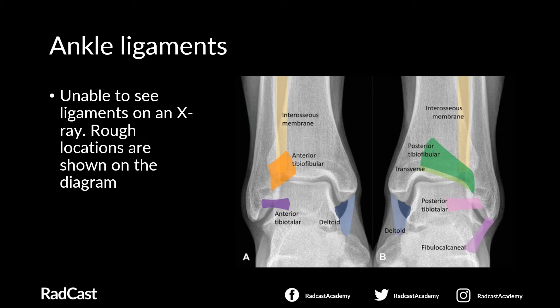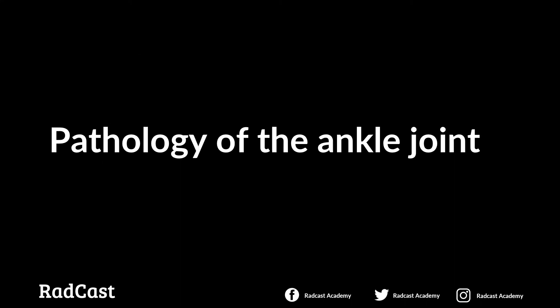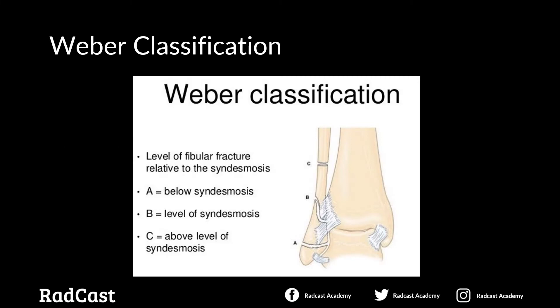If the ligaments are ruptured, this can contribute to the instability of the ankle and allow joint dislocations. Rough ligament locations are shown on these helpful x-rays with the overlying coloured structures. This is important, as if there is a fracture line extending through the ligament insertion sites, you can expect those ligaments to also be disrupted. The easiest way to approach common pathologies of the ankle joint is to look at the Weber classification first. The Weber classification divides fractures into those below syndesmosis, called Weber A fractures; at the level of syndesmosis, Weber B fractures; and above the level of syndesmosis, Weber C fractures. It provides an easy way of categorizing ankle fractures and has implications when assessing joint stability.